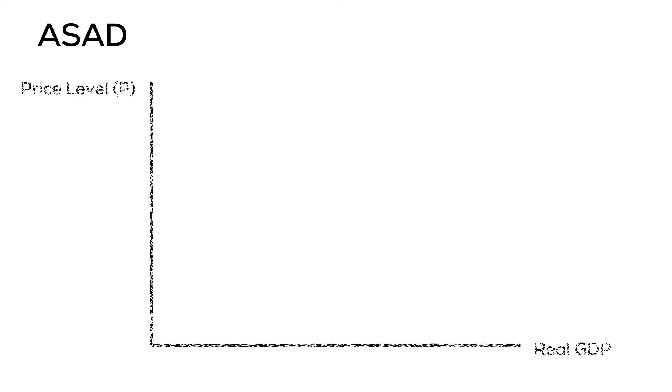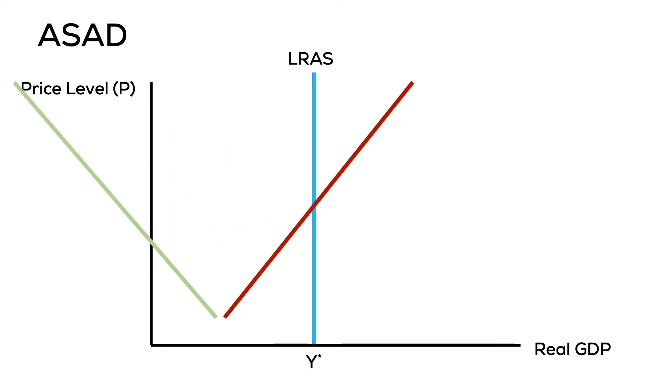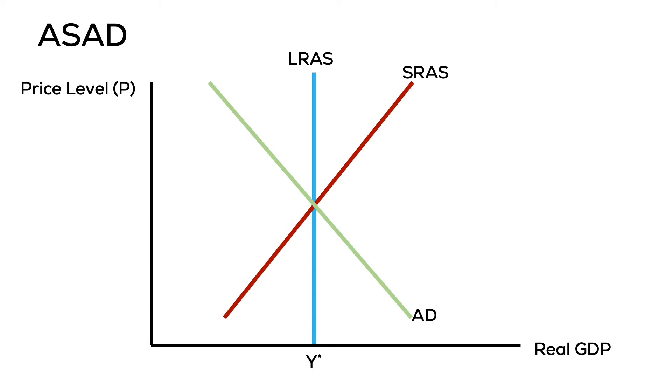This is the second week of the AS-AD model. Here we're going to be bringing everything together — everything that we've learned. We're going to try to tell the story of the economy in the short run and in the long run, bringing the aggregate demand curve, the short-run aggregate supply curve, and the long-run aggregate supply curve together to tell the story of the economy.